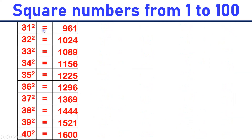31 square is equal to 961. 32 square is equal to 1024. 33 square is equal to 1089. 34 square is equal to 1156. 35 square is equal to 1225. 36 square is equal to 1296. 37 square is equal to 1369.